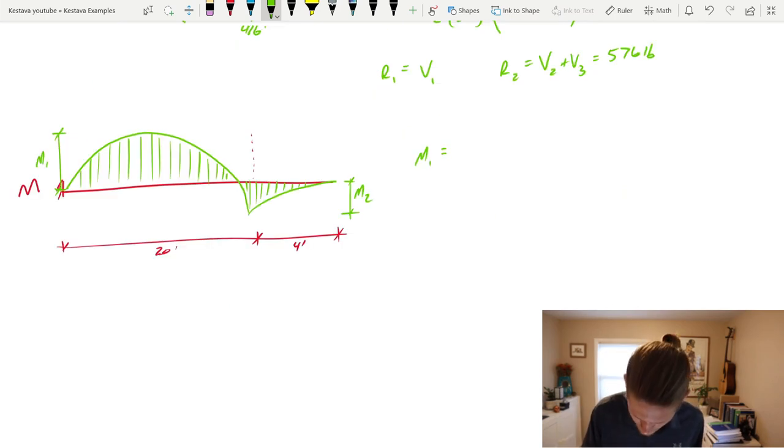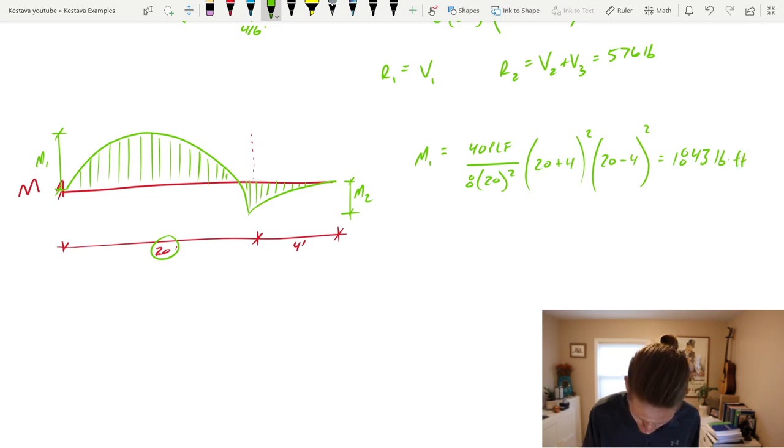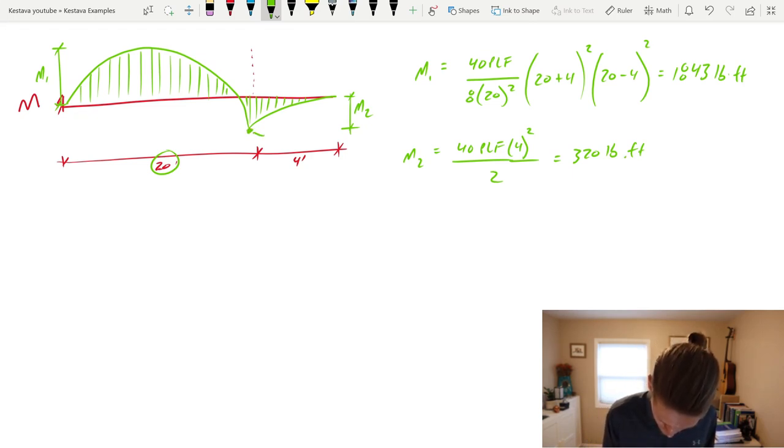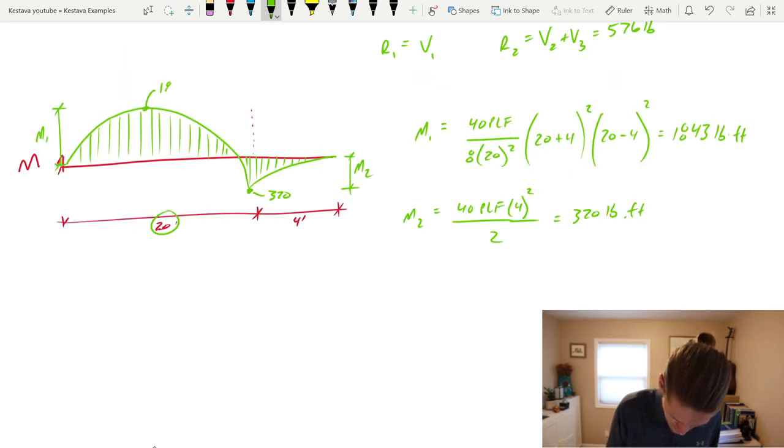M1 is equal to the equation 40 PLF, again, the distributed load, over 8 times 20. And, again, this one right here. You can see the similarities in the equations. All times 20 feet plus the 4-foot cantilever or parapet. All of that added and then squared and then multiplied by 20 feet minus the 4-foot cantilever squared. Again, that gets us 1,843 pound feet. And then, M2 is equal to 40 PLF times your cantilever length squared over 2. That equals 320 pound feet. And we come over here, that's 320, and then we're at the peak here, and that's 1,843.